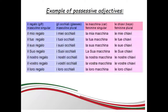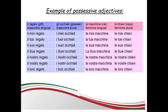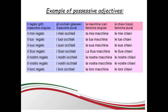Now I will show you how to use possessives with the following nouns: il regalo, which means gift; gli occhiali, glasses; la macchina, car; le chiavi, keys.